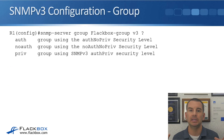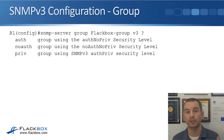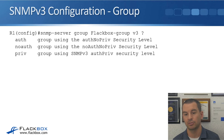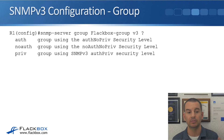Let's look at the configuration. We're going to have a group and a user. To configure the group, at global config we use the command 'snmp-server group'. In this example, the group is called flatbox-group. We specify v3 for SNMP version 3. Using the context-sensitive help with the question mark shows the next keyword, which is where we set the security level: auth, noauth, or priv.